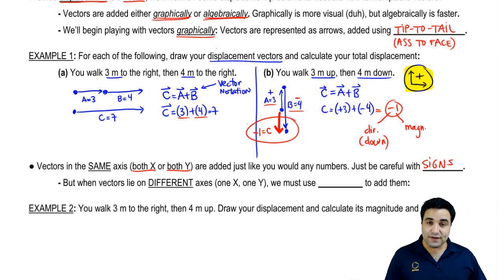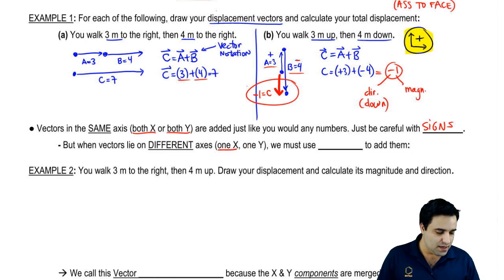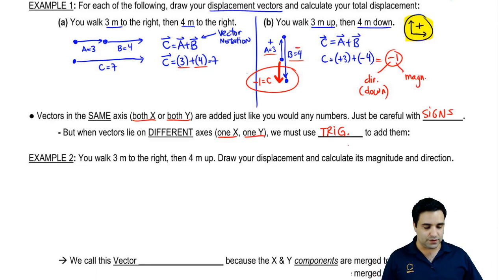That is the easiest way to add vectors, the easiest situation to add vectors if they're both in the x or both in the y-axis. So vectors on the same axis, both x, both y, are just added like you would add any numbers. So 3 plus 4, and then here I just have to be careful with the signs. Just be careful with signs that have to do with direction. Now, if they lie on different axes, so if one of them is in the x-axis and the other one is on the y-axis, we're going to use trigonometry, trig, to add them, to combine these vectors.